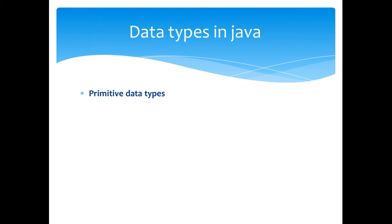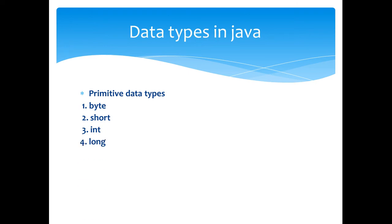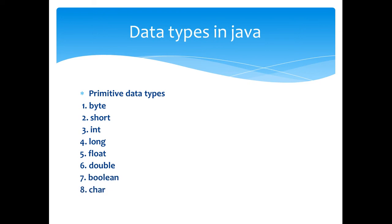Now we are going to look at what are the primitive data types available in Java. The first one is the byte type, second one is short, third one is integer and long, float type, double, boolean, and character.